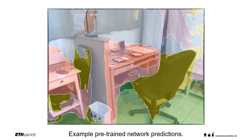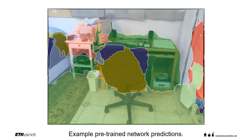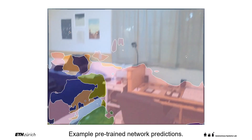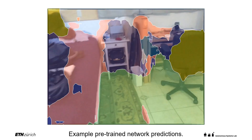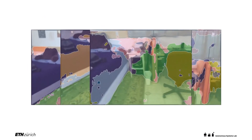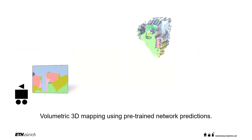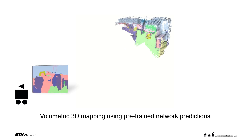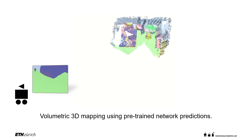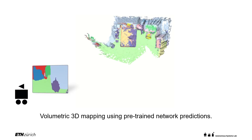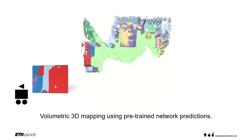The illustrated video shows the color-coded semantic segmentation predictions of the pre-trained neural network. Common failure modes include disagreeing semantic segmentation estimates over consecutive frames for the same objects. To mitigate these failure modes, we perform 3D voxel-based semantic mapping, which enforces multi-view consistency.